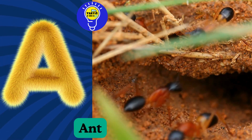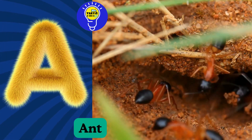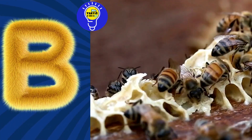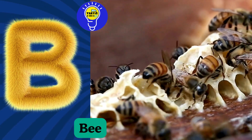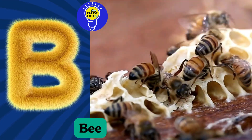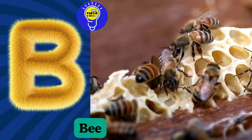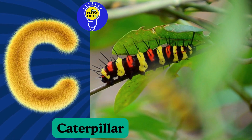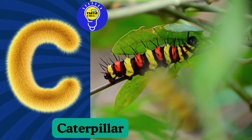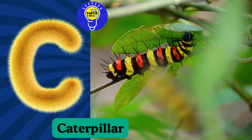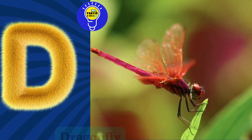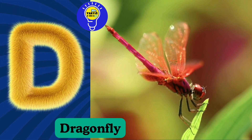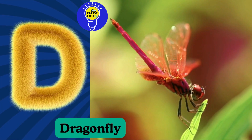A is for Ant, A, A, Ant. B is for Bee, B, B. C is for Caterpillar, C, C, Caterpillar. D is for Dragonfly, D, D, Dragonfly.